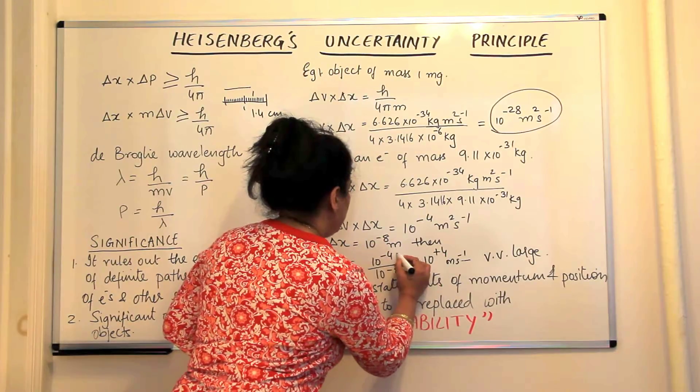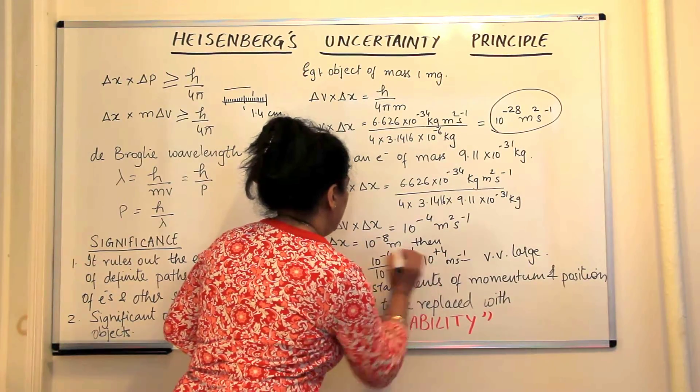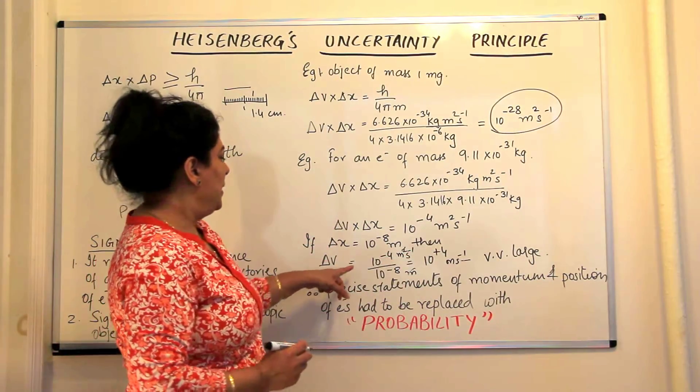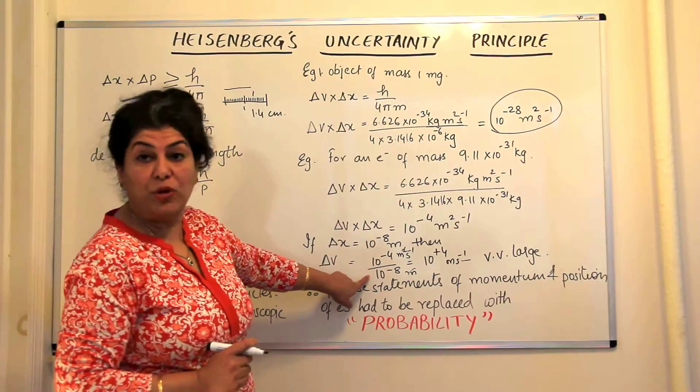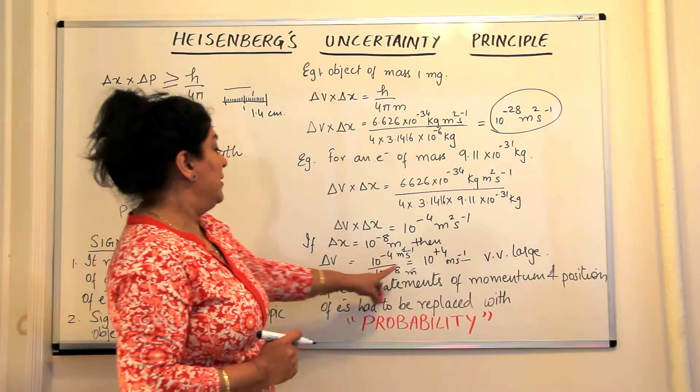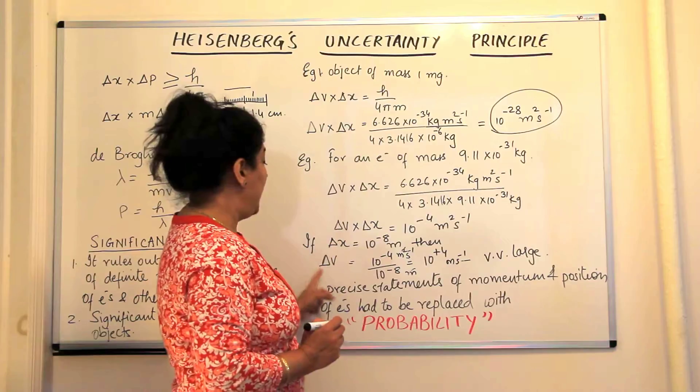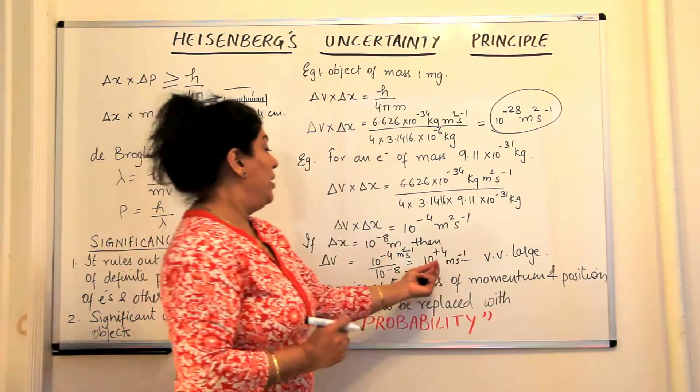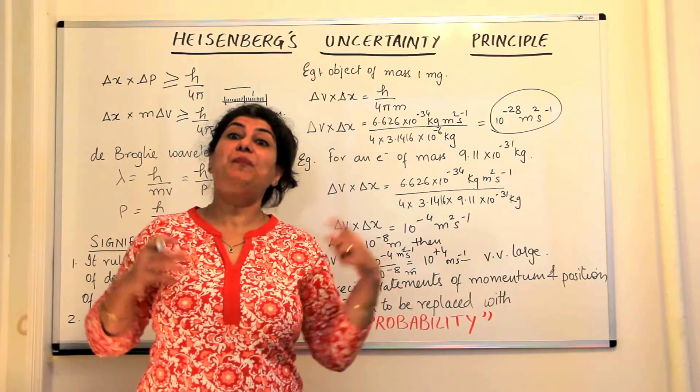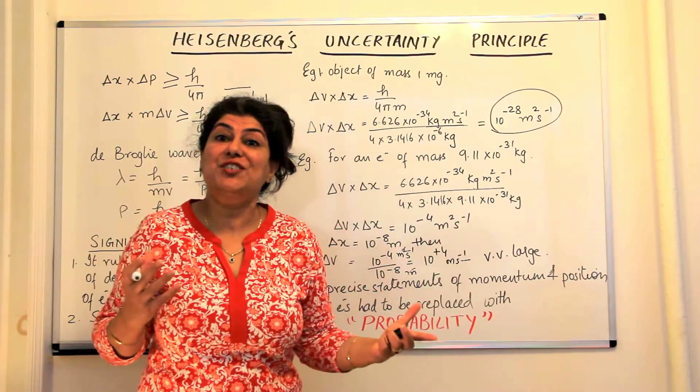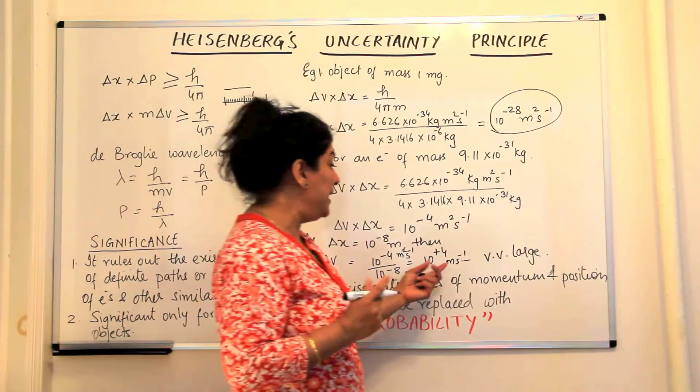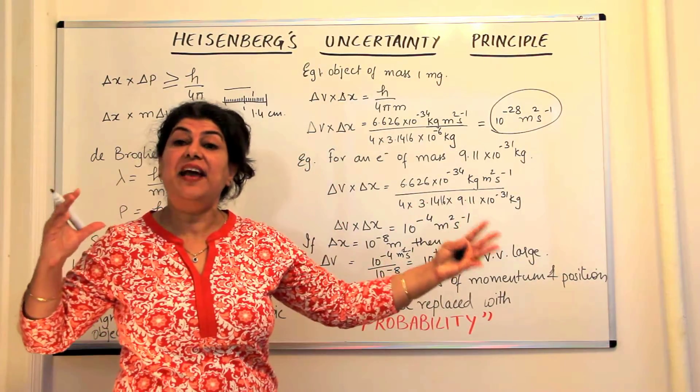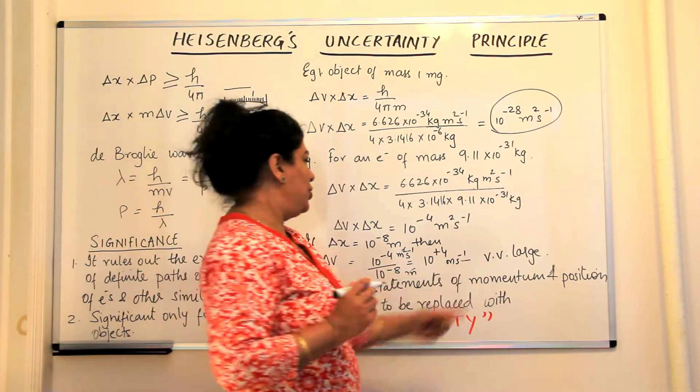And this is meter square second inverse. So if you cancel out the units, this would be meters per second. So 10 to the power minus 4 divided by 10 to the power minus 8 would equal—the error in velocity would be 10 to the power plus 4 meters per second. How much is it? The error in velocity would be 10,000 meters per second, an error of such large magnitude.